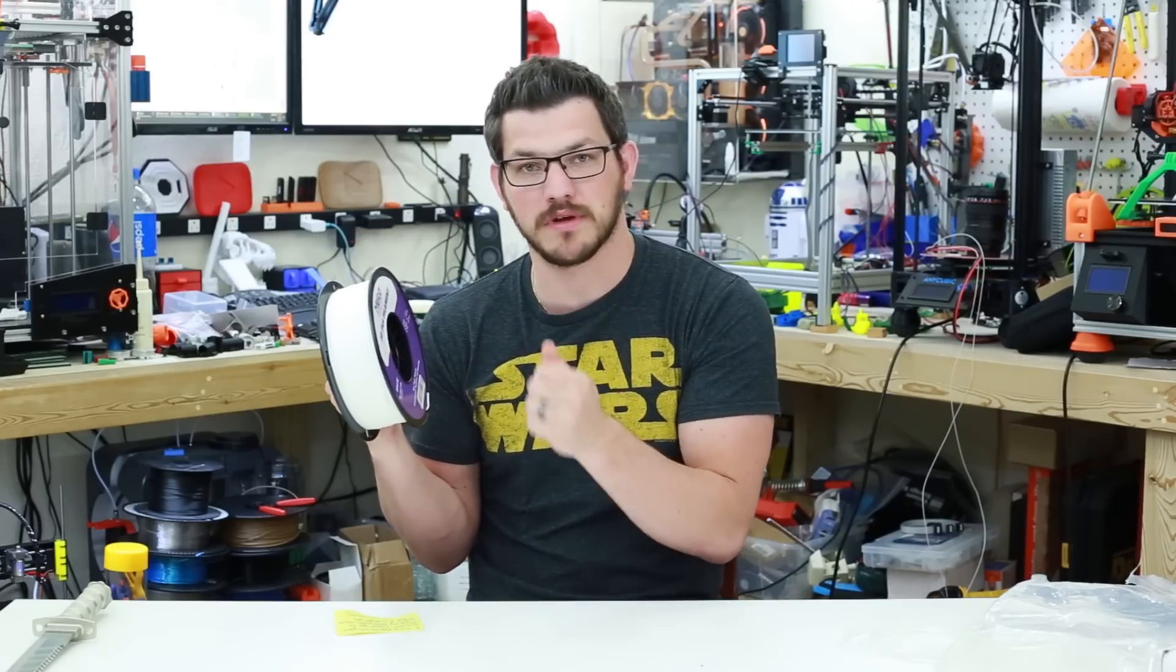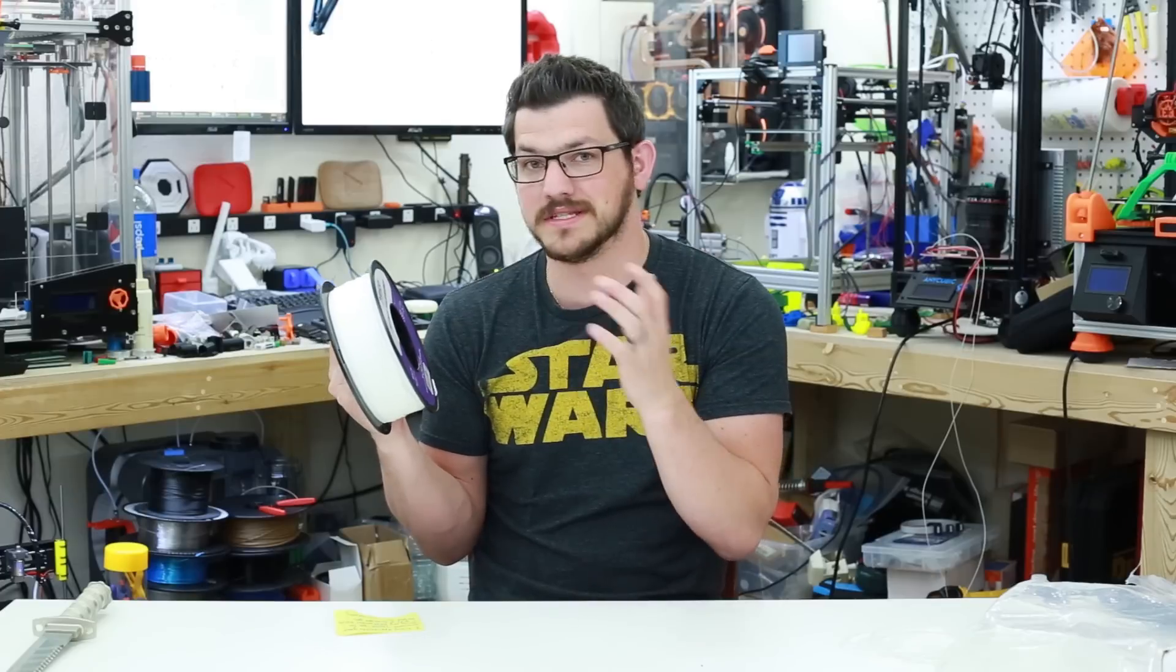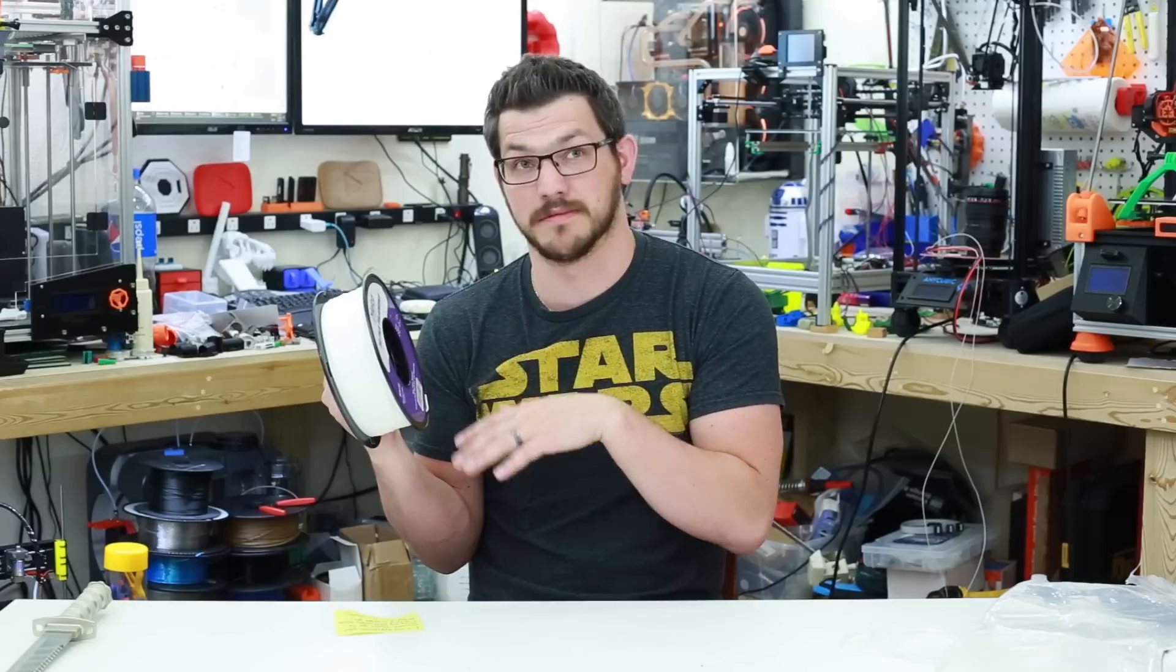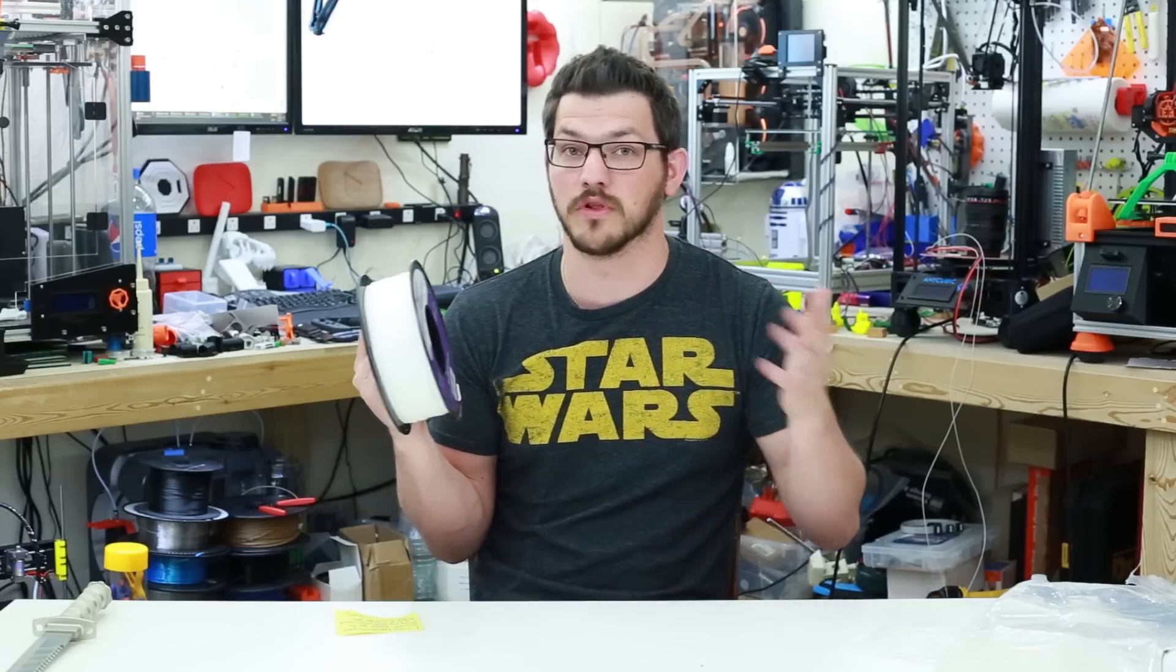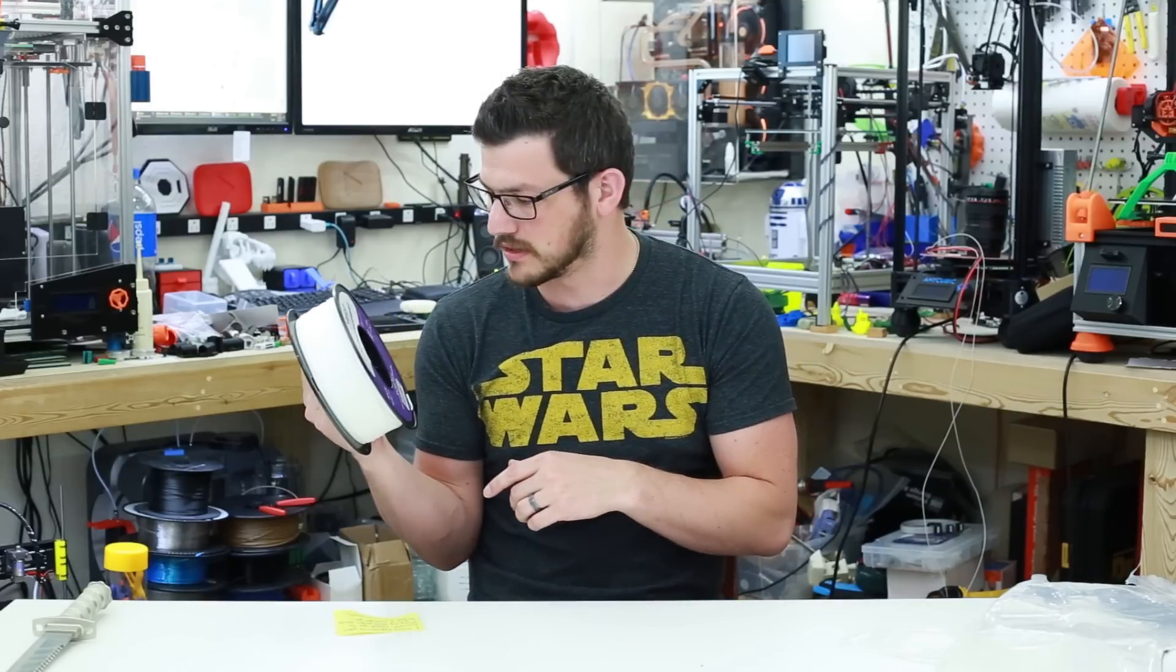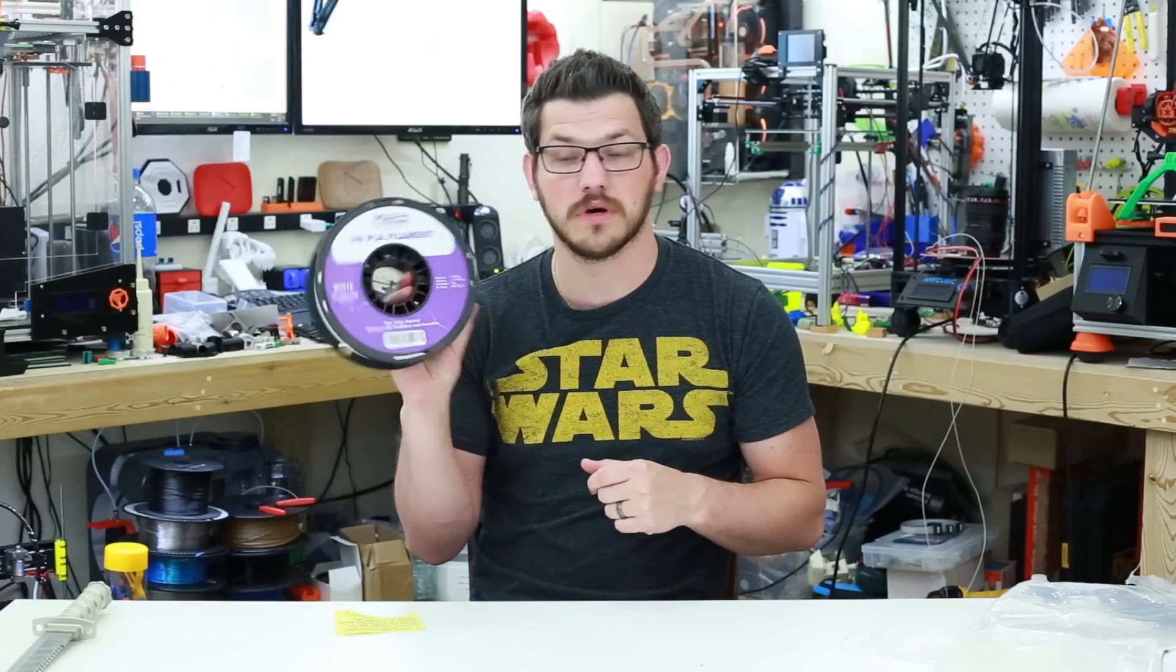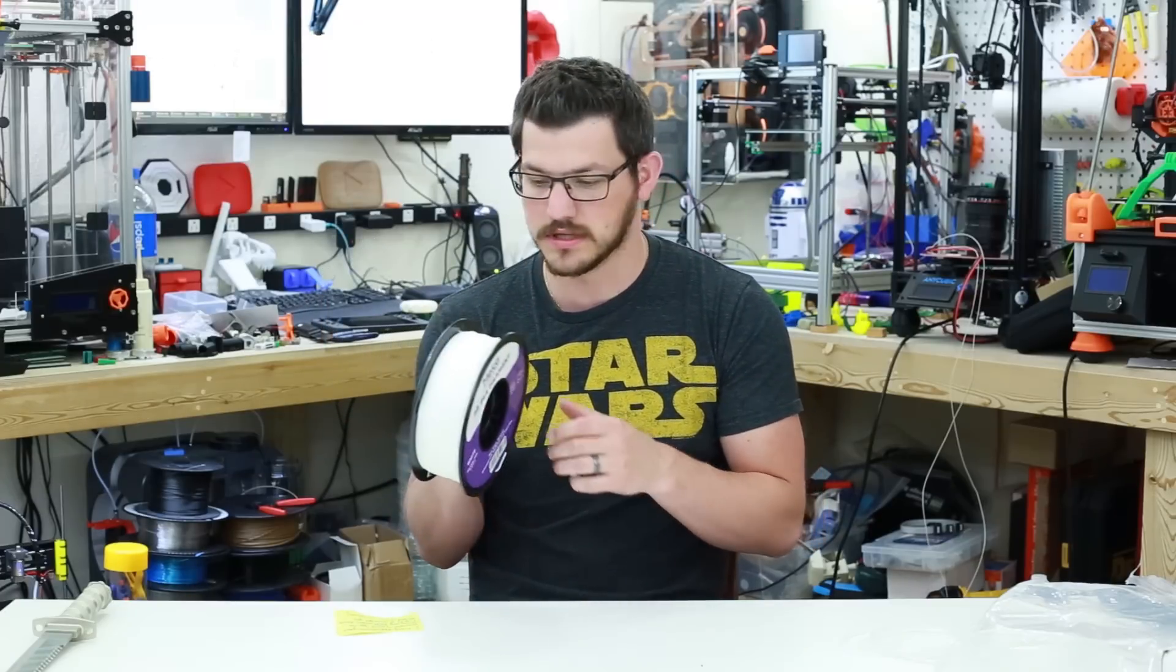0.02 is more of the high-end filaments. 0.03 or 0.04, 0.05 is more of the low-end filaments, so this kind of falls right in the middle there. It's a kilogram and the extrude temperature is 180 to 220 degrees centigrade.